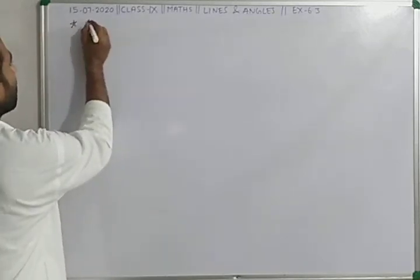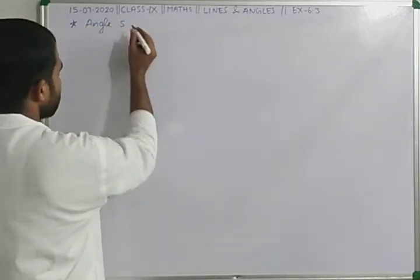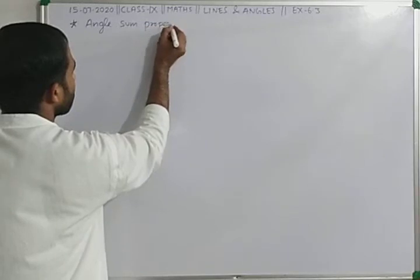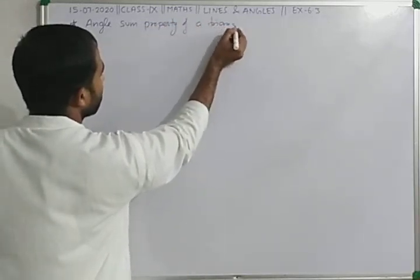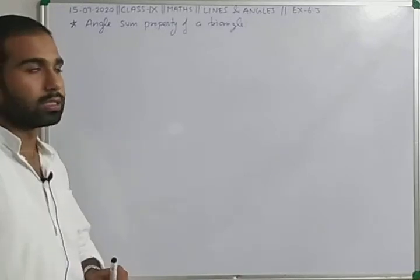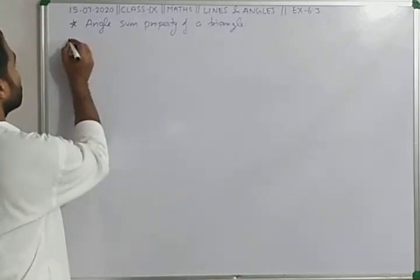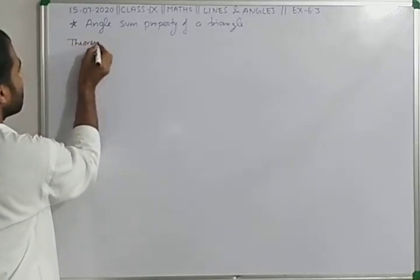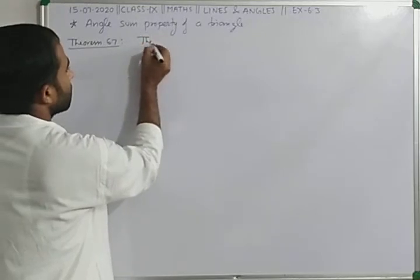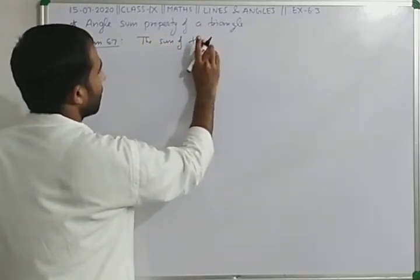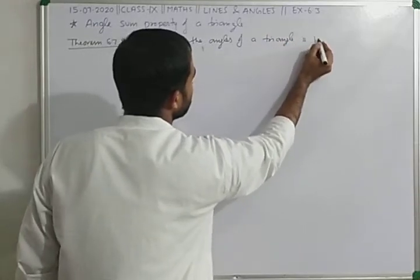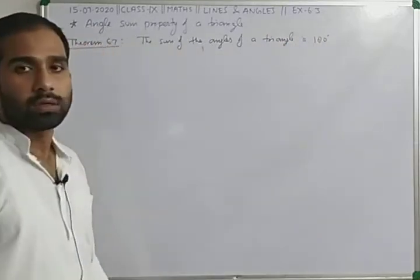The topic is angle sum property of a triangle. In your NCERT book, there are two theorems given related to this topic. Theorem 6.7 says the sum of the angles of a triangle is 180 degrees.